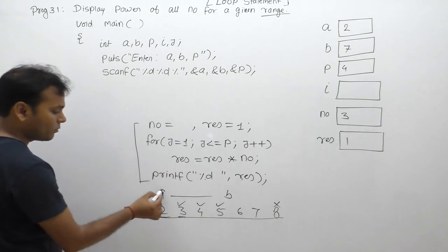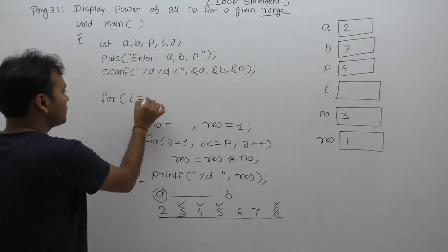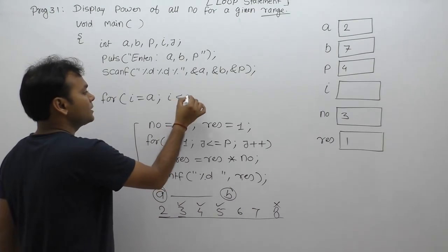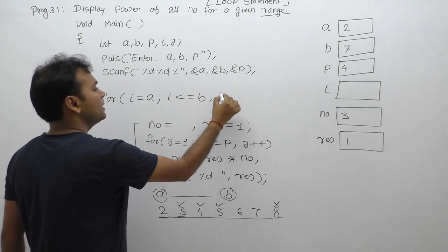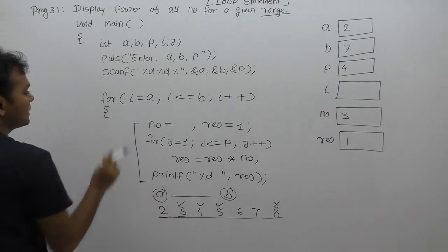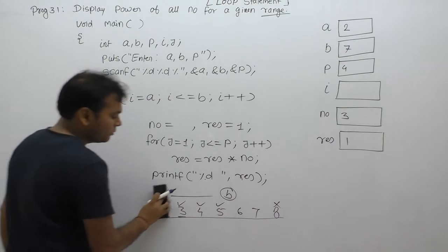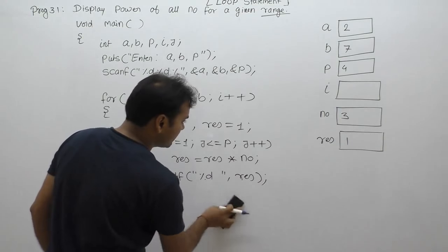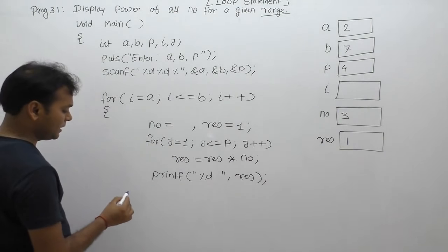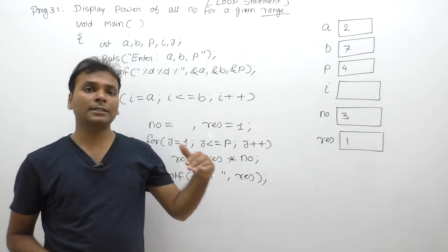The outer loop is written as: for(i = a; i <= b; i++). The remaining part — the inner loop and power calculation logic — goes inside the body of this outer loop. We close the outer loop after the complete inner logic.